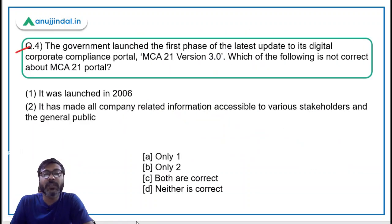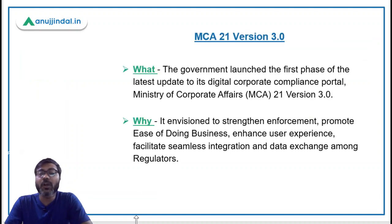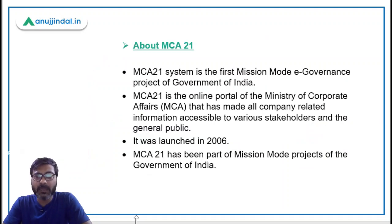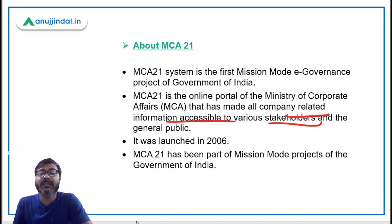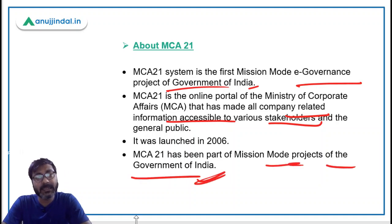Question number four, the last question for today: The government launched the first phase of the latest update to its digital corporate compliance portal, MCA 21 Version 3.0. You have to identify which of the following is not correct about the MCA 21 portal. MCA 21 Version 3.0 is envisioned to strengthen enforcement, promote ease of doing business, enhance user experience, and facilitate seamless integration and data exchange among regulators. It is an online portal of the Ministry of Corporate Affairs making all company-related information accessible to stakeholders and the general public. It was launched in 2006 and was the first mission mode e-governance project of the Government of India.